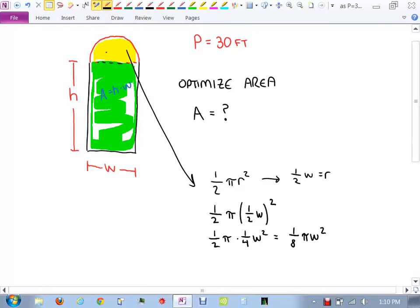Okay, so now let me go up and label this area up here in the yellow. It's one eighth pi w squared. So the area of my window now would be height times width, so hw, plus one eighth pi w squared. Now that is a legitimate objective equation, but I would like that to be in terms of one variable, so that I can use all the calculus and try and find the max min and all that stuff.